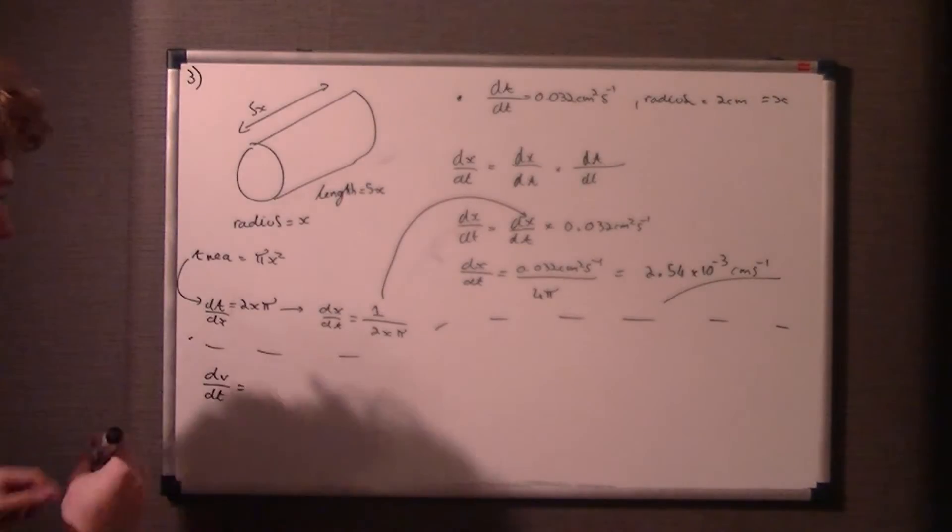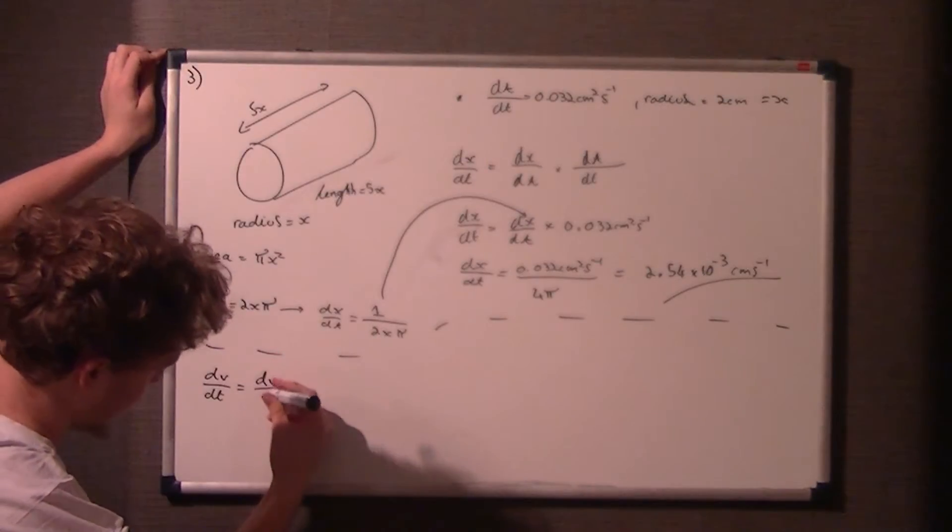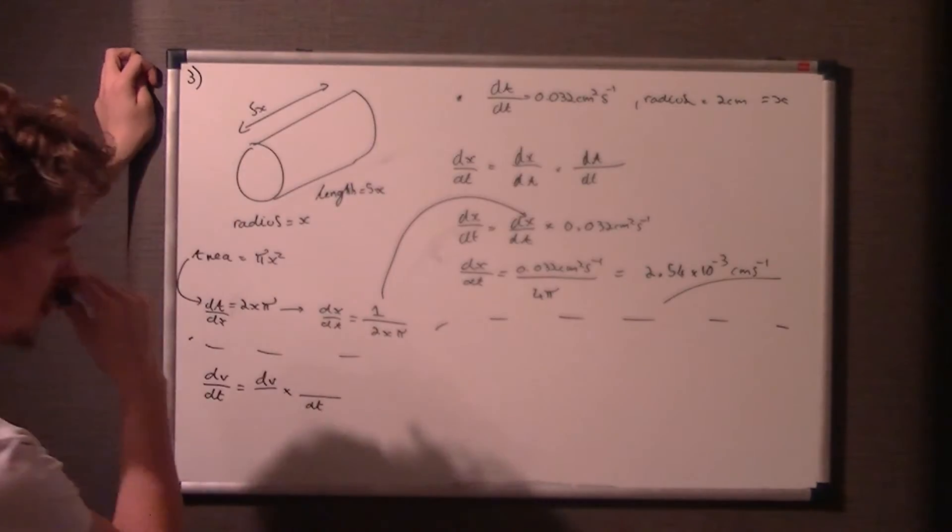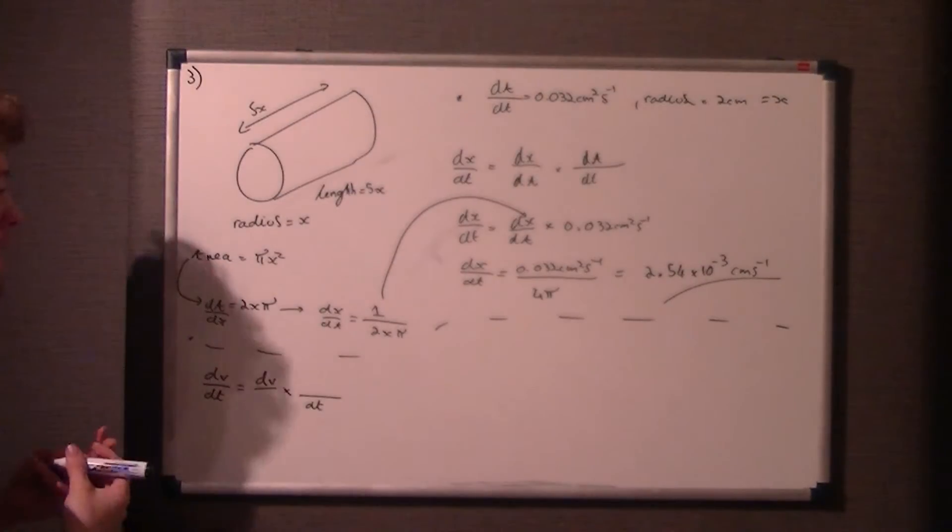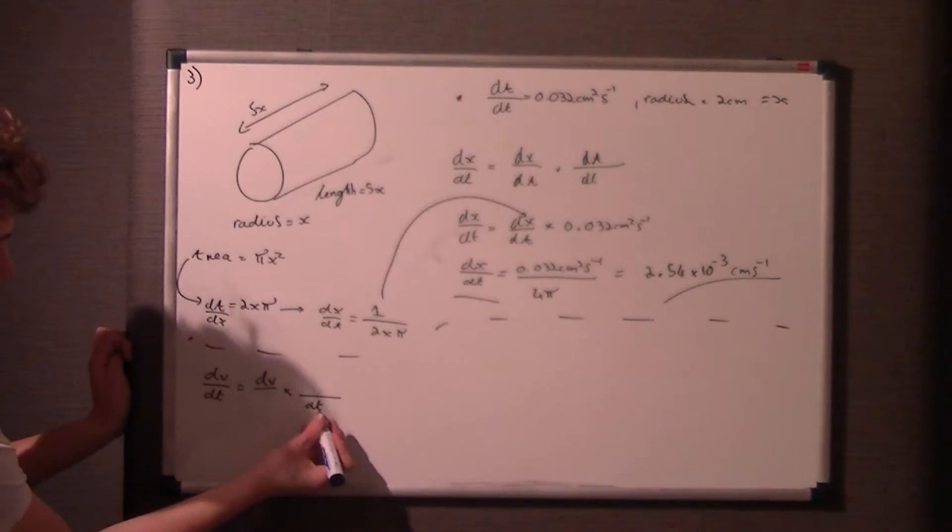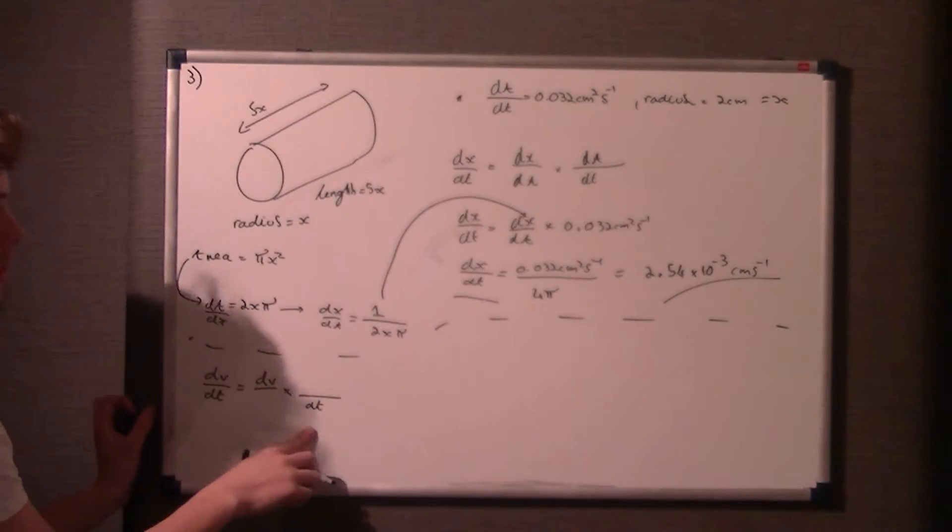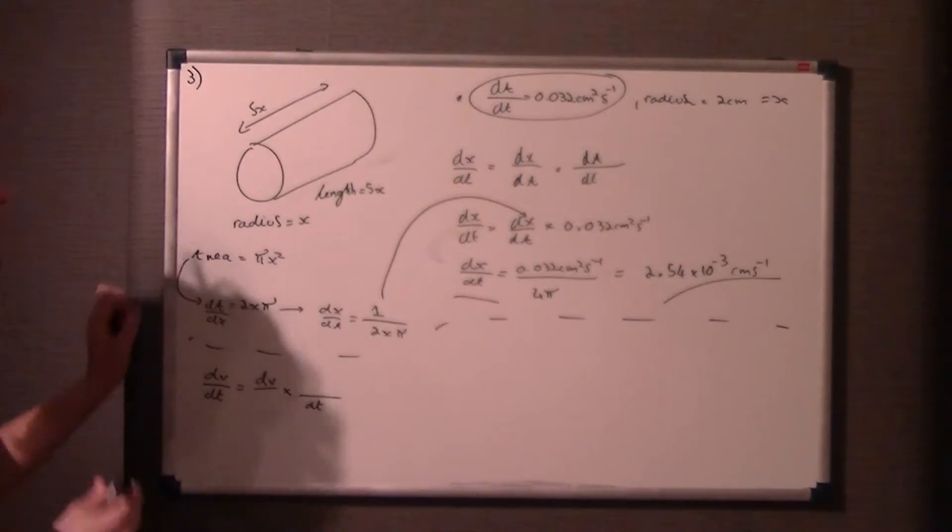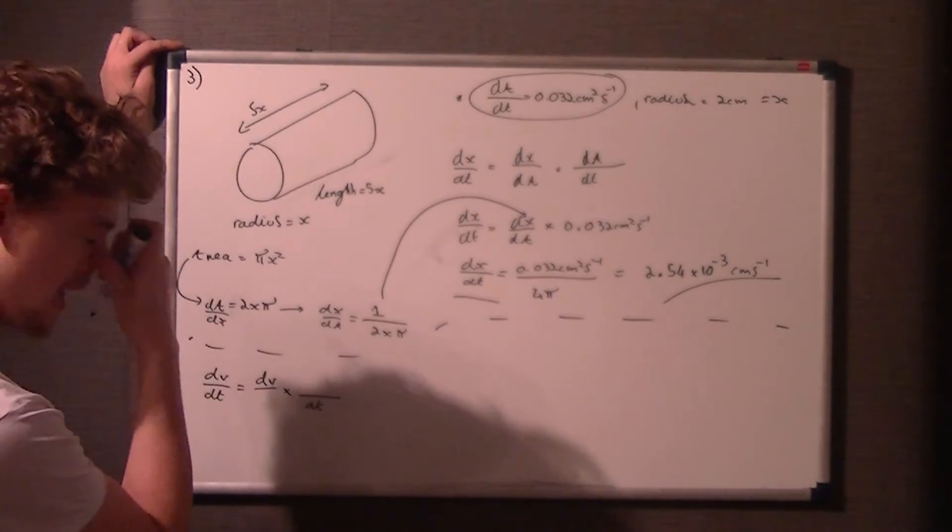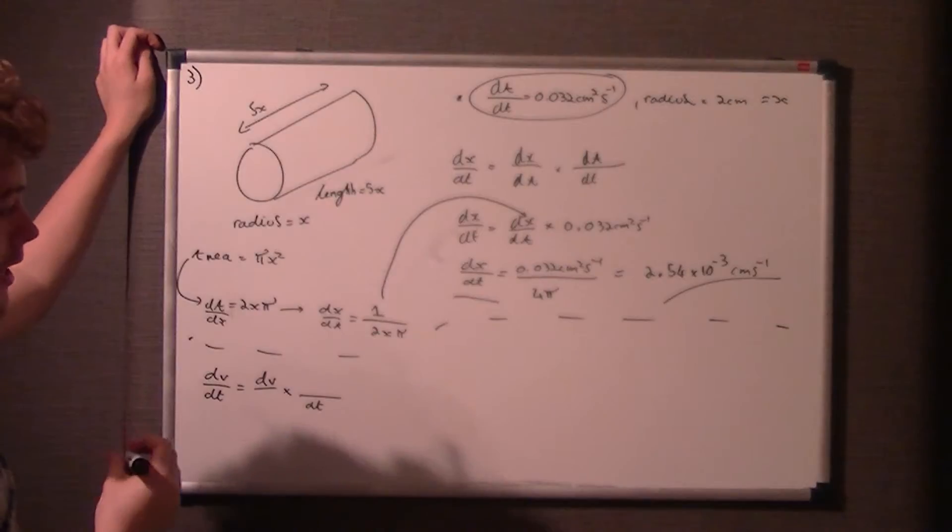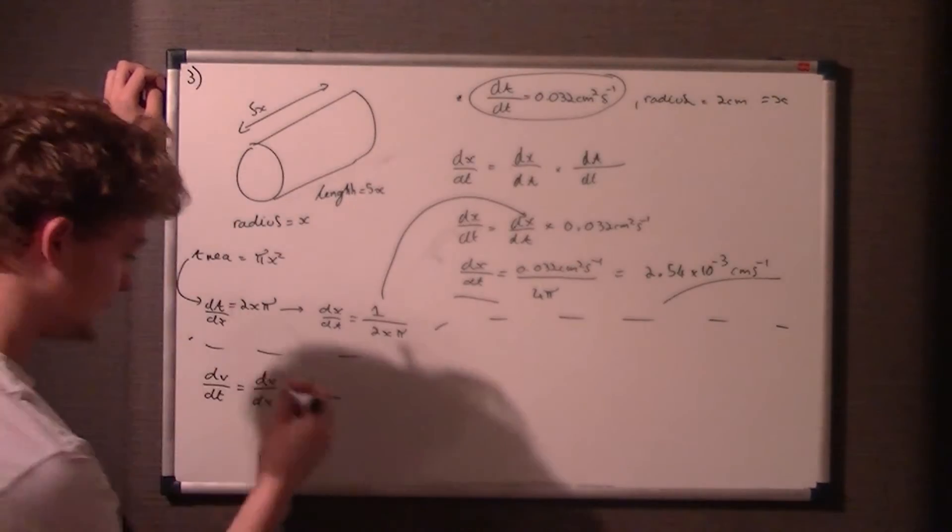So we have to come up with another differential equation to work this out. So do the same principle we did before. So the d at the top, so dv over d something times the same d something over dt. The only other variable we've got is a or x. Now we've just worked out dx/dt, and we've got dt here. If you put a in there, that would be very difficult to work out. It's a lot easier to just do dx as the unknown. So dv/dx times dx/dt.